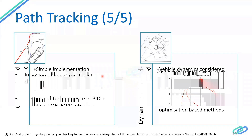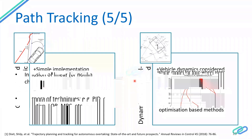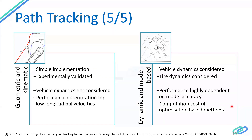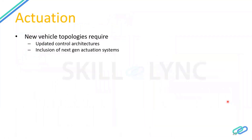If a control law is designed for traveling at 100 km/h, controller performance degrades quickly once the vehicle speed reduces, so these controllers are not very robust to speed changes. Model-based and dynamic techniques, on the other hand, consider the entire vehicle dynamics and come up with more realistic steering angles, but performance is highly dependent on the accuracy of both the tire and vehicle model. Optimization-based techniques such as MPC also have high computational requirements.